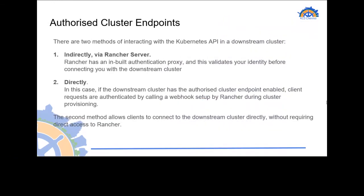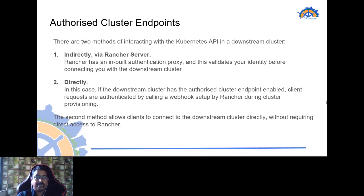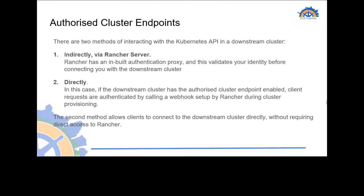Rancher provides two methods of interacting with the Kubernetes API in a downstream cluster. The first is indirect — Rancher has its own built-in authentication proxy that validates the user's identity before connecting to the downstream cluster. The second option is direct access: if the downstream cluster has the authorized cluster endpoint enabled, client requests can be authenticated by calling a webhook set up by Rancher during cluster provisioning. This allows clients to connect to the downstream cluster directly without requiring direct access to Rancher, so even if the Rancher server becomes unavailable, you can still connect to the downstream cluster.